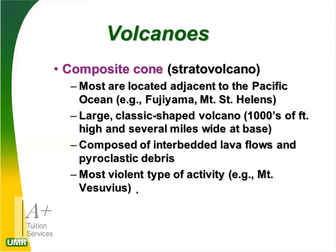The composite cone, also called a stratovolcano, is the regular volcano structure we know of. Most are located adjacent to the Pacific Ocean. Examples include Fujiyama and Mount St. Helens. It is a large, classic-shaped volcano, thousands of feet high and several miles wide at the base. It is composed of interbedded lava and pyroclastics — continuous eruptions form layers, making the cone higher. It is the most violent type; an example is Mount Vesuvius.